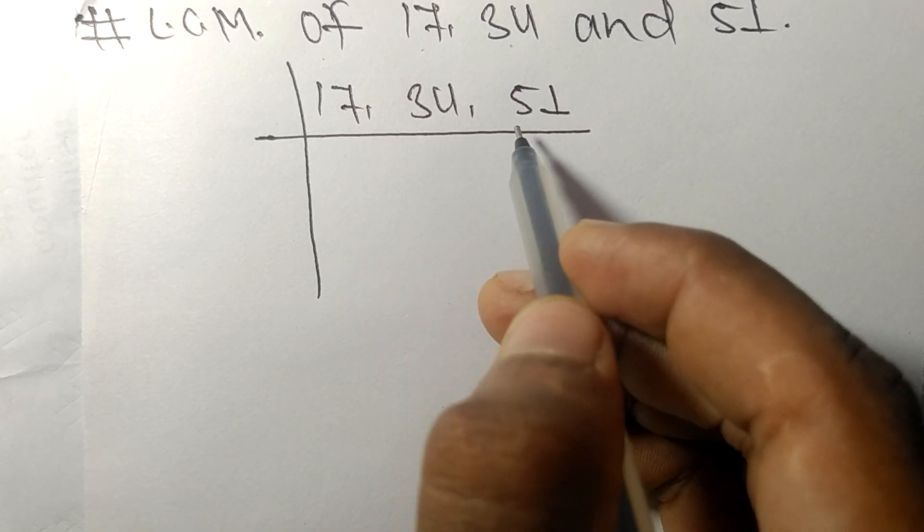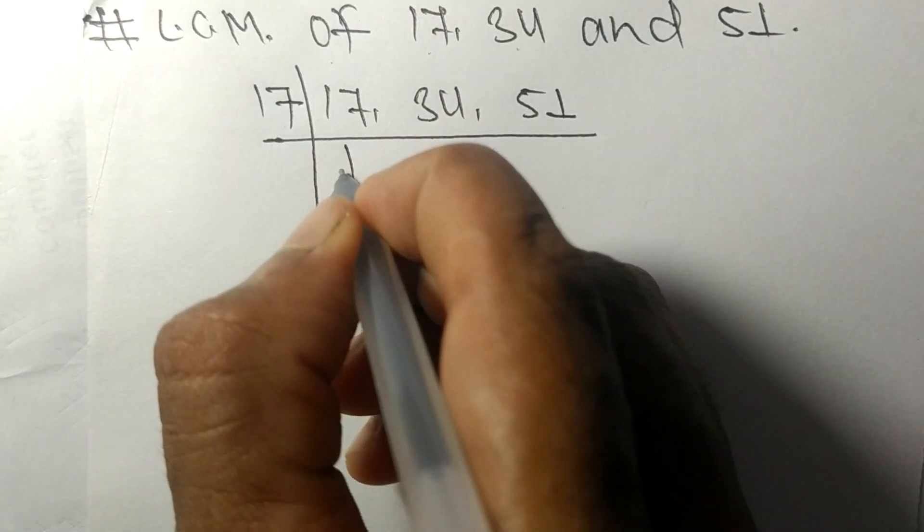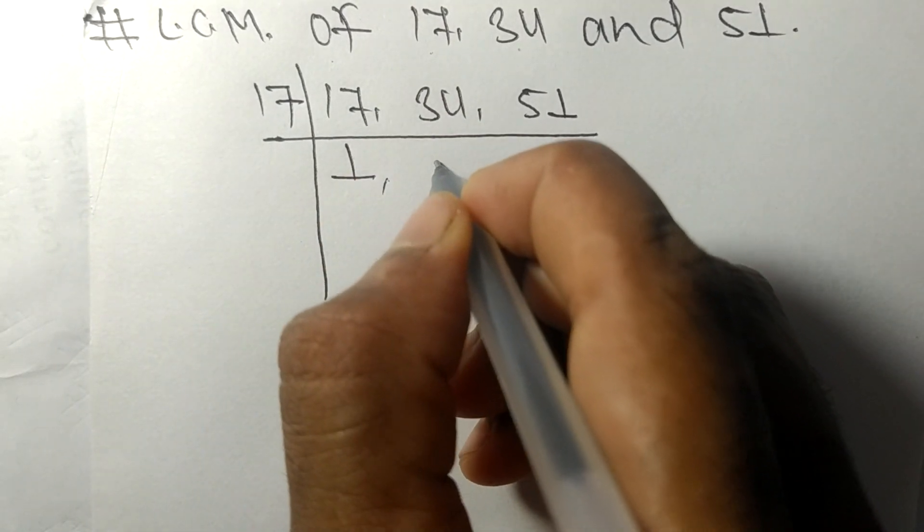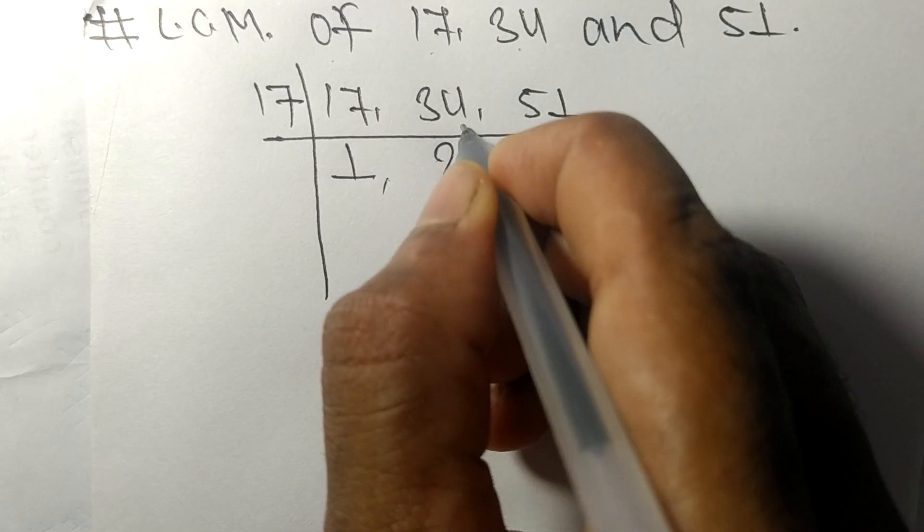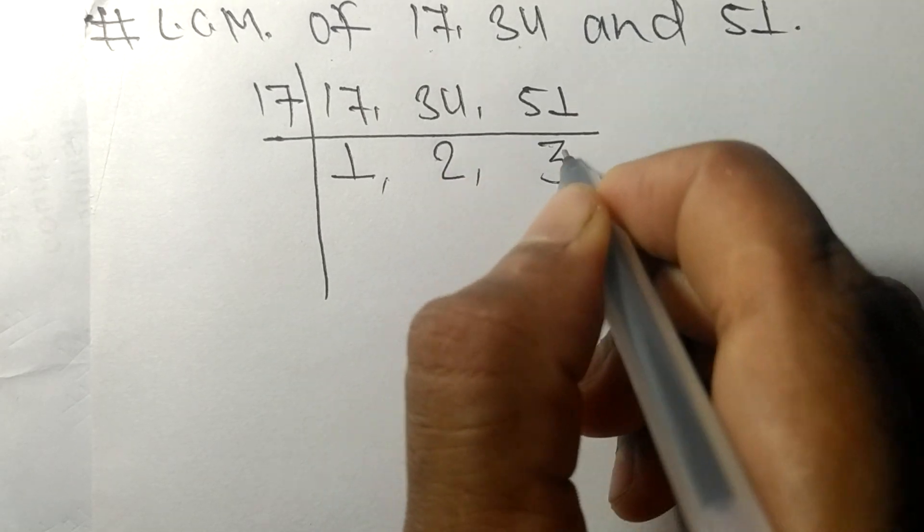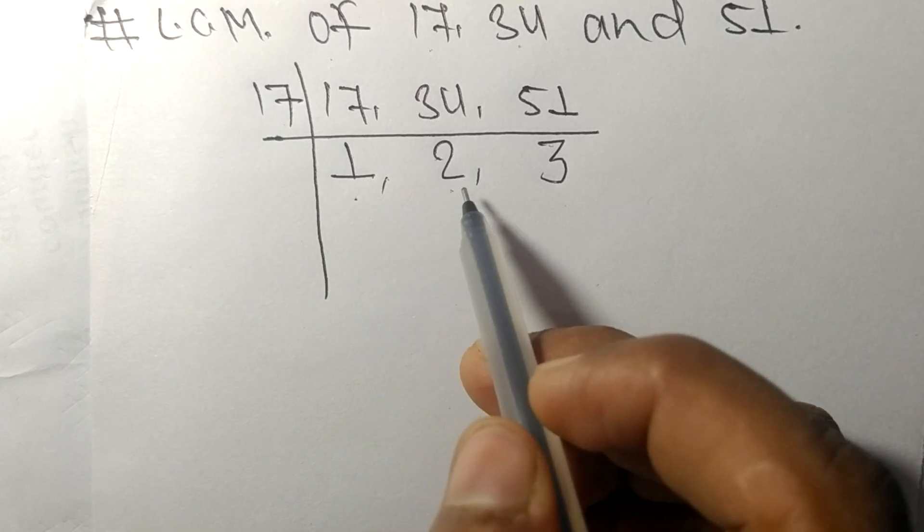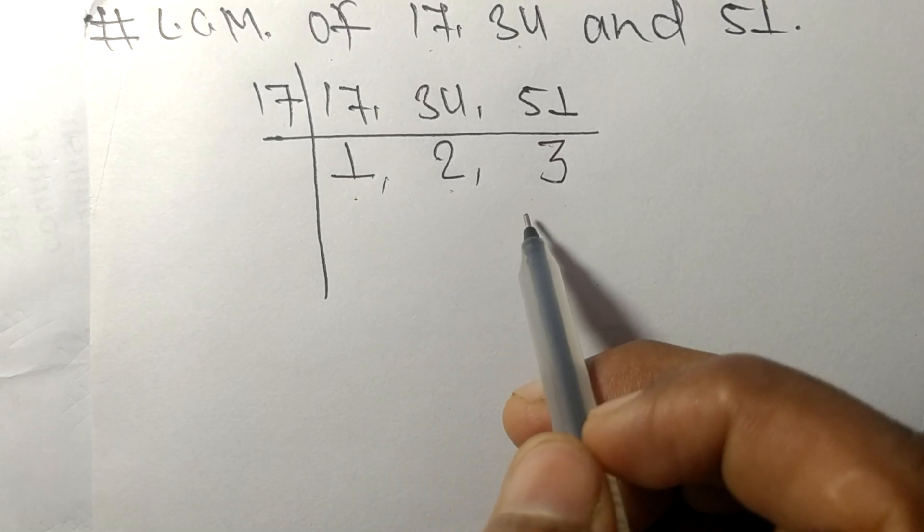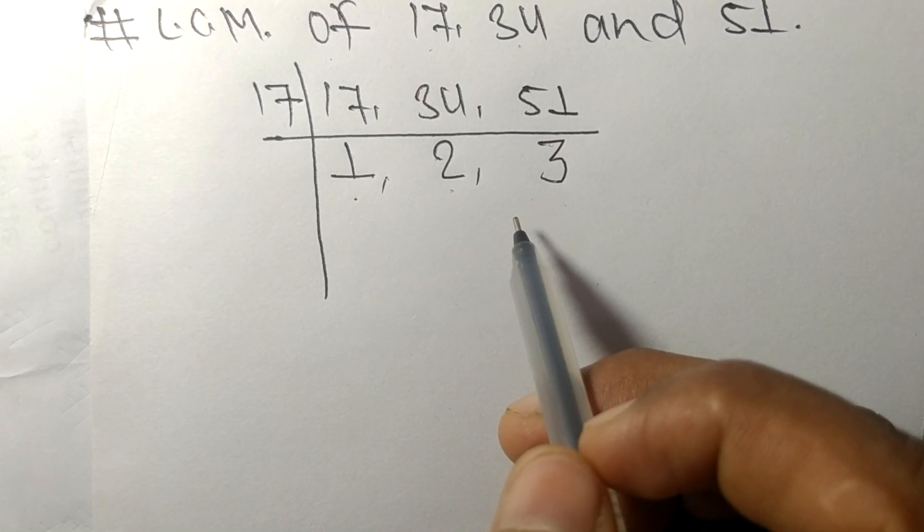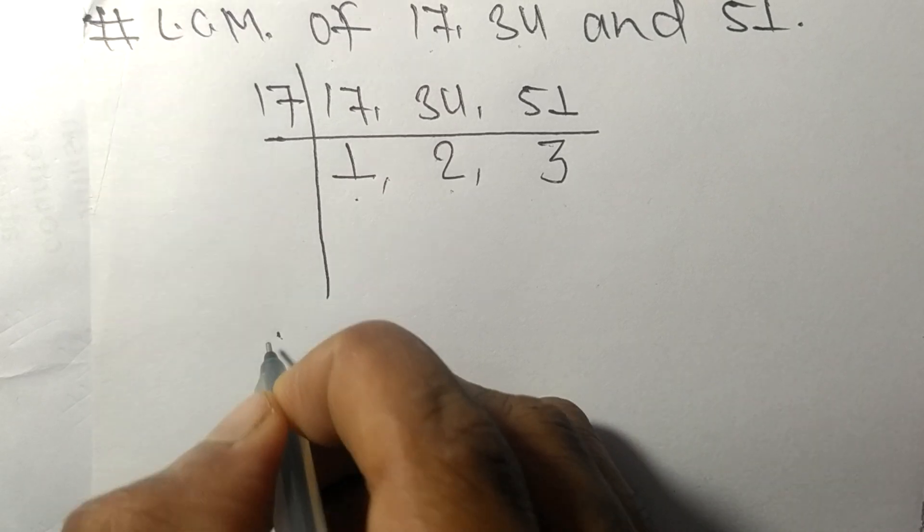These all numbers are divisible by 17. So 17 times 1 means 17, 17 times 2 means 34, 17 times 3 means 51. So now we got 1, 2, and 3, which are not exactly divisible by the same number.